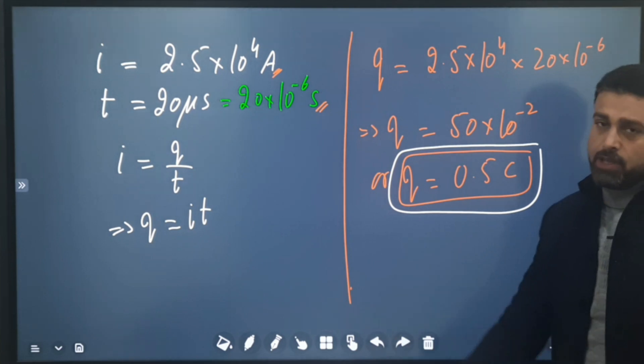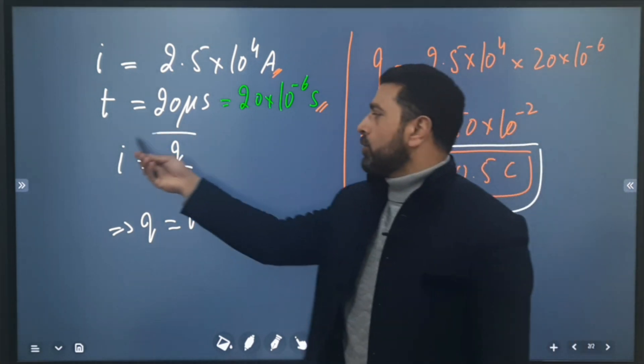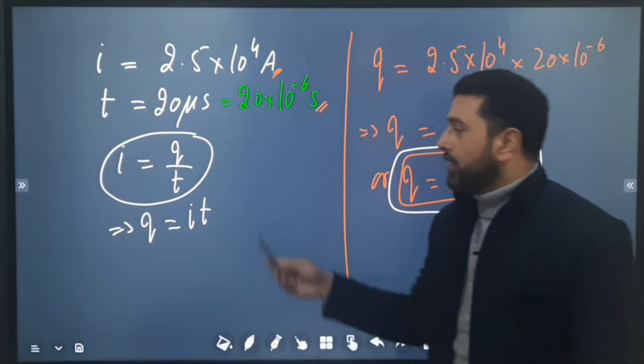0.5 Coulomb. So extremely simple problem, simple substitution. You just need to know the definition of current. I equals Q divided by T.